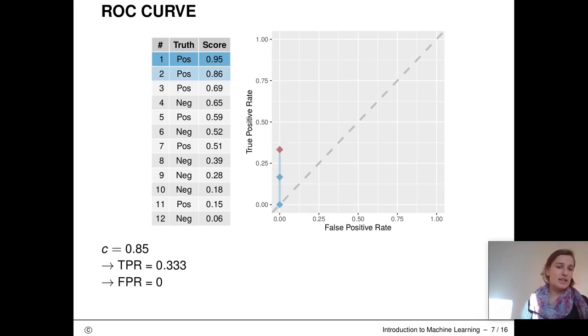In the next step, we select the threshold between the second and the third observation, so 0.85. TPR again goes up by one sixth, and FPR stays the same, as again the observation is positive. Now, the third threshold is 0.66, and as the third observation is again positive, we jump by one sixth on the y-axis.